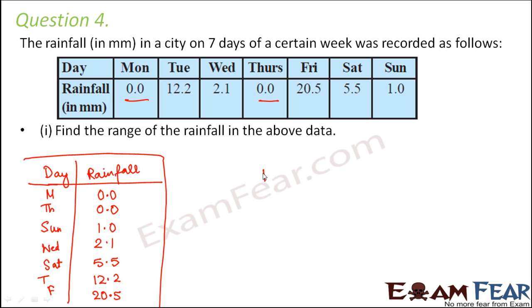Now we have to find the range of rainfall. Now how do we find range? We know that range is nothing but the difference between the highest value or the maximum value and the minimum value. Now looking at this organized data, can you tell which day receives the highest rainfall? Of course it is Friday, and how much is the highest rainfall? It is 20.5. What about the lowest rainfall? Lowest rainfall is received by both Monday and Thursday and the value is 0.0.